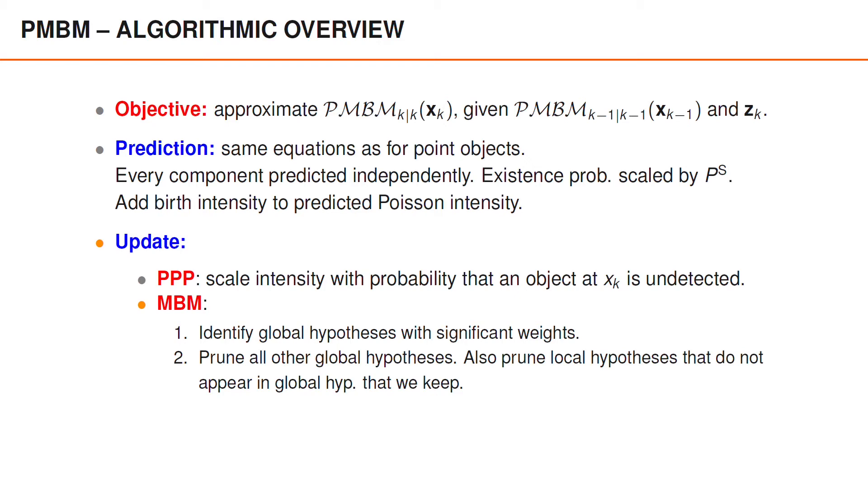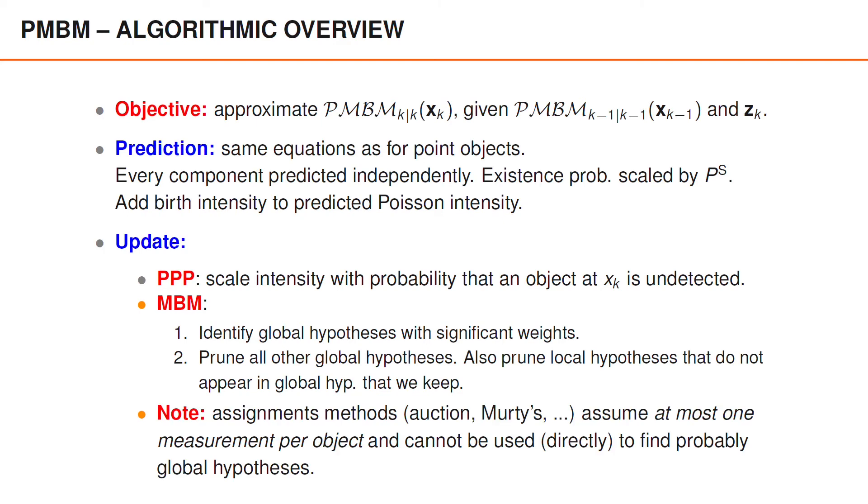Does this mean that we can also use the same machinery as before? No, it doesn't. And this is one reason that extended object tracking is more challenging. Specifically, all the assignment methods that you've learned about assume that at most one detection can be associated to each object. Unfortunately, this means that they cannot be used to find the most likely global hypotheses.